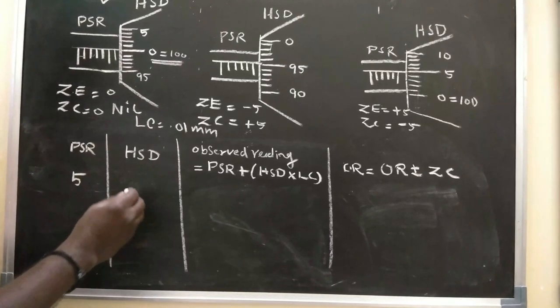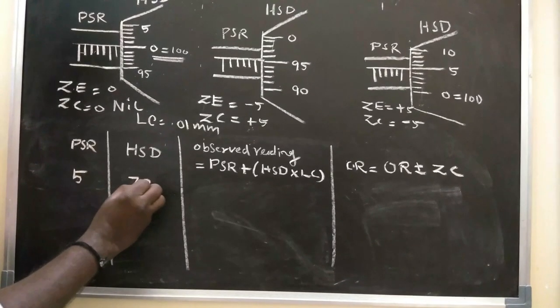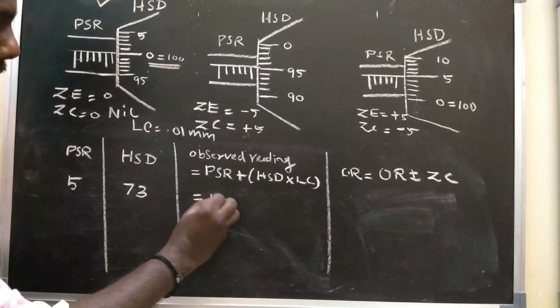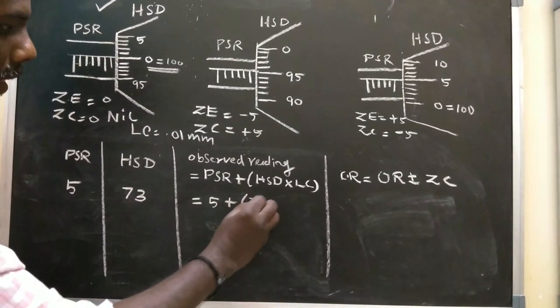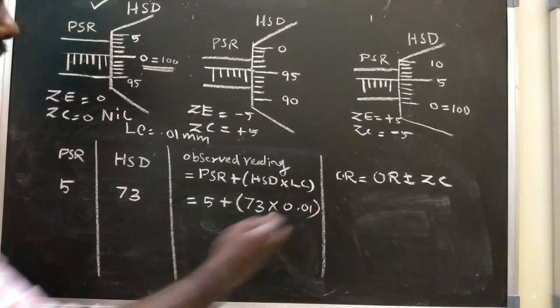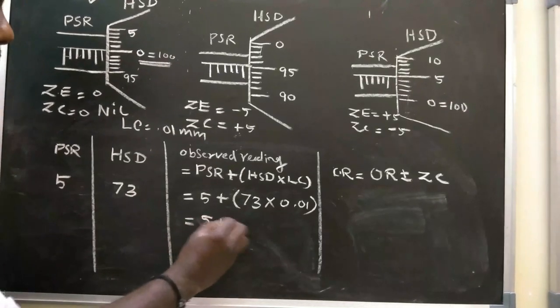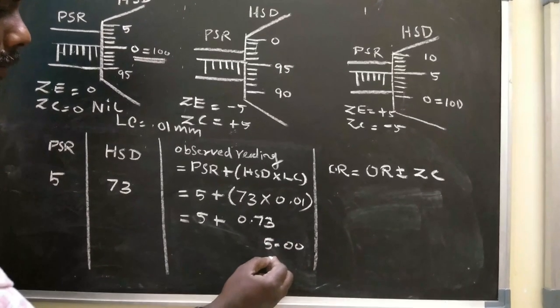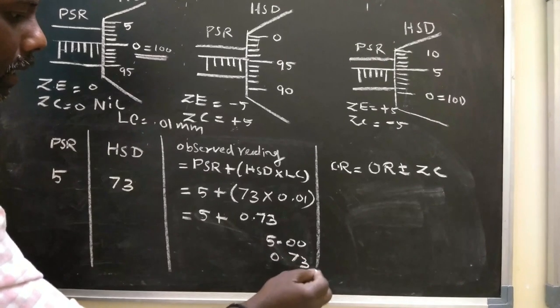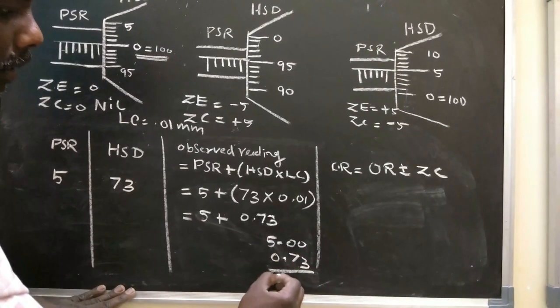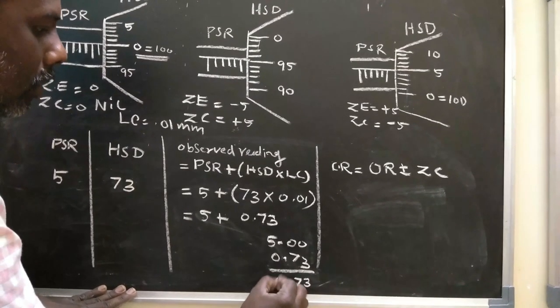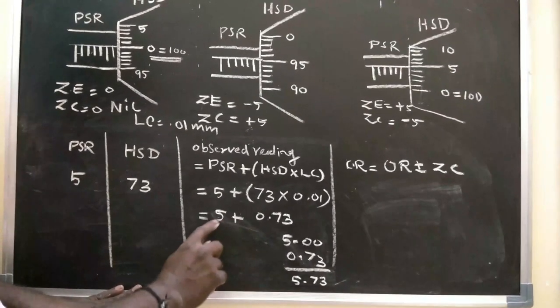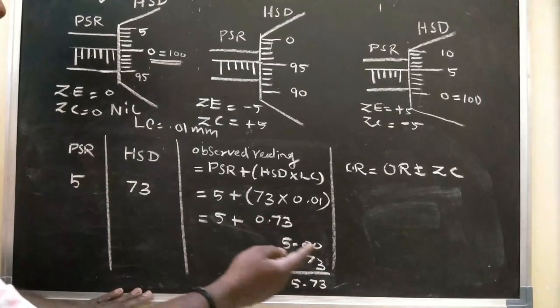For this calculation, PSR is 5 and HSD is 73. The observed reading is PSR plus HSD times least count: 5 plus 73 times 0.01 equals 5 plus 0.73, which gives us 5.73. This is the observed reading before applying any correction.